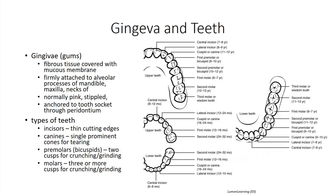The gingiva envelop the outer surface of the upper and lower jaw and are composed of a fibrous material covered by a mucous membrane that is continuous with the lining of the cheeks. The gingiva are firmly anchored to the alveolar processes through the periodontium lining the sockets.